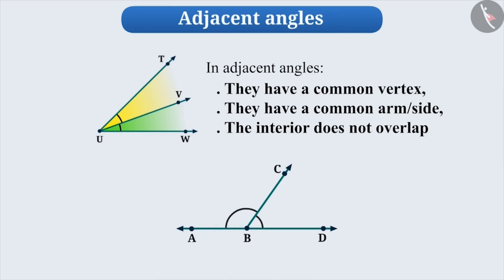Now look at this figure. Is the angle shown in it an adjacent angle? Think for a while. You got it right. Here, angle ABC and angle CBD comply with the given three conditions, so they are adjacent angles.